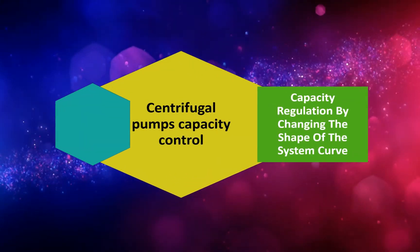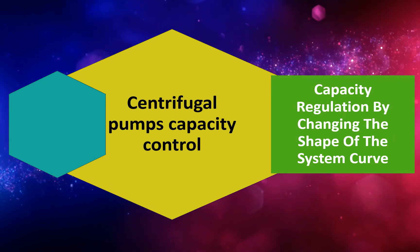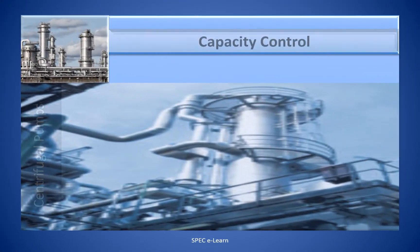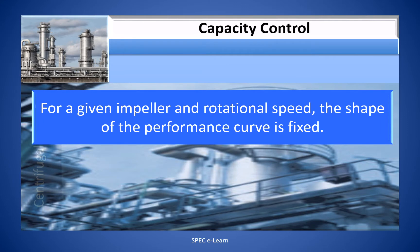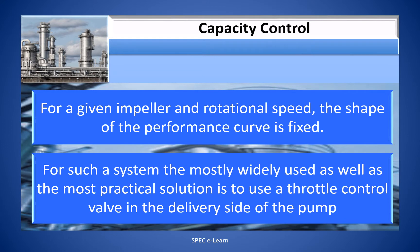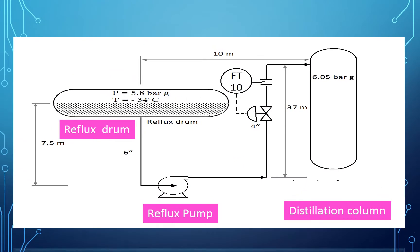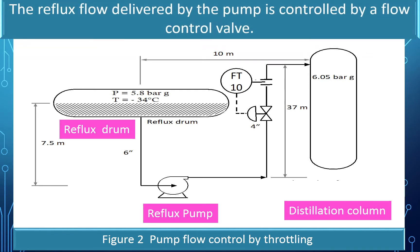Centrifugal pump capacity control — capacity regulation by changing the shape of the system curve. For a given impeller and rotational speed, the shape of the performance curve is fixed. For such a system, the most widely used and most practical solution is to use a throttle valve in the delivery side of the pump. Illustrated in this figure is a centrifugal pump installed as a reflux pump for a distillation column.